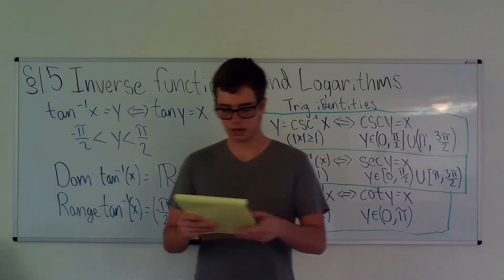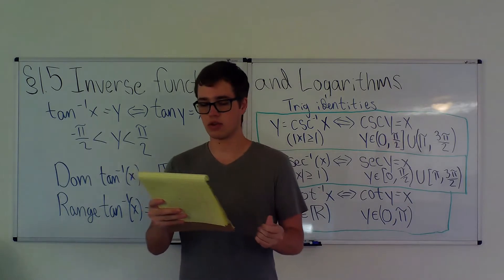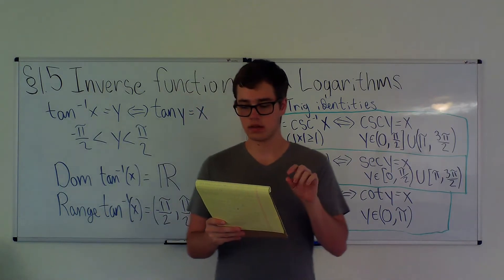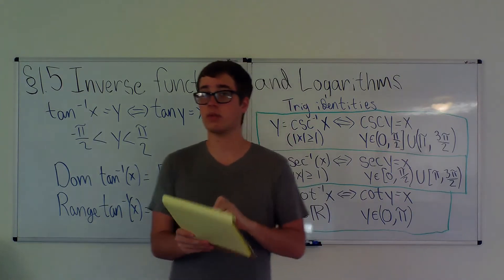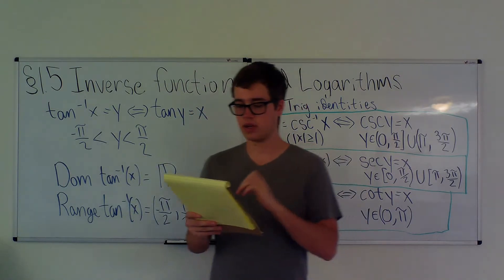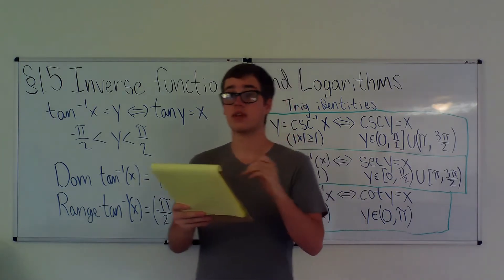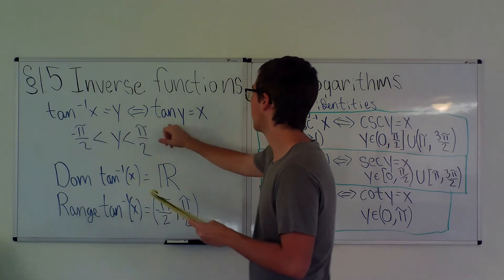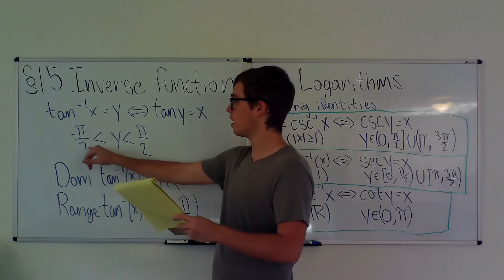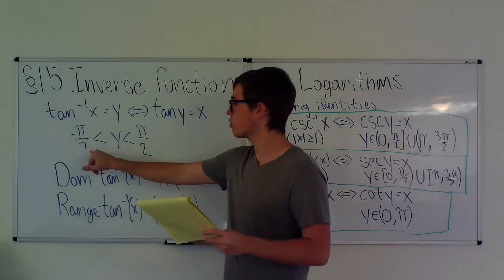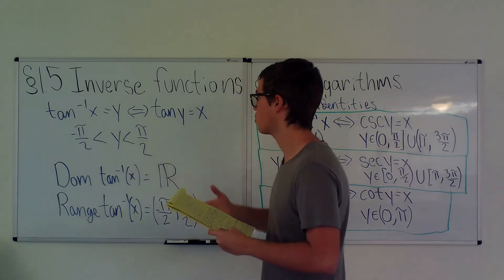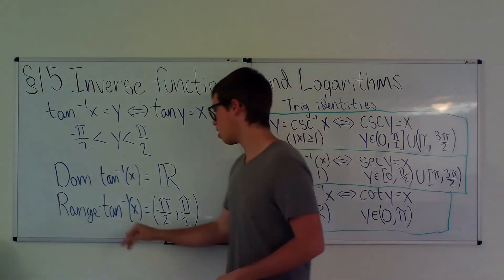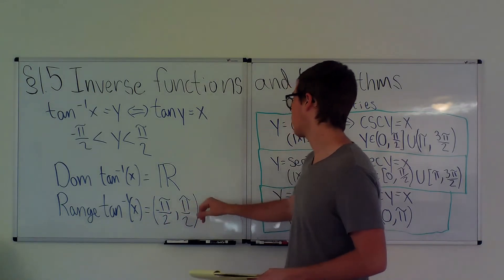Now onto arctan. We restrict the domain of f(x) = tan(x) to −π/2 < x < π/2, not including the endpoints. tan⁻¹(x) = y if and only if tan(y) = x, where −π/2 < y < π/2. The domain of tan⁻¹(x) is all real numbers and the range is from −π/2 to π/2.